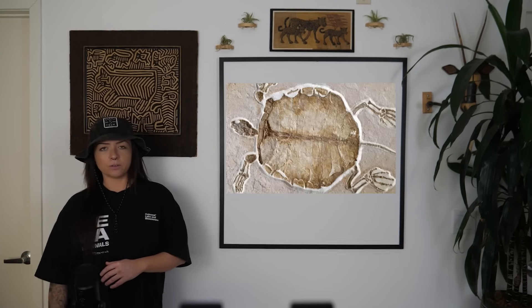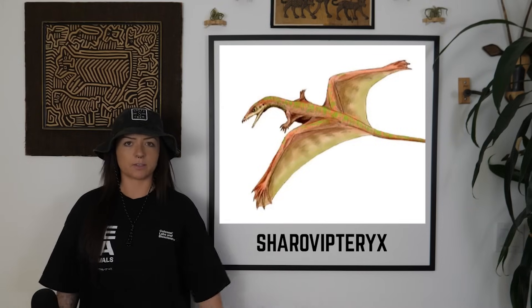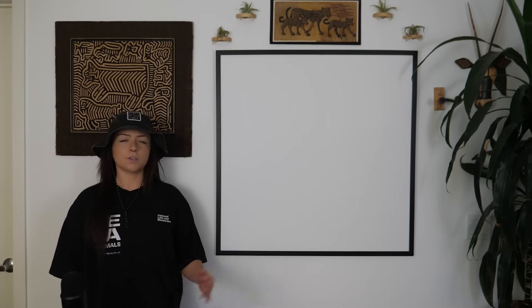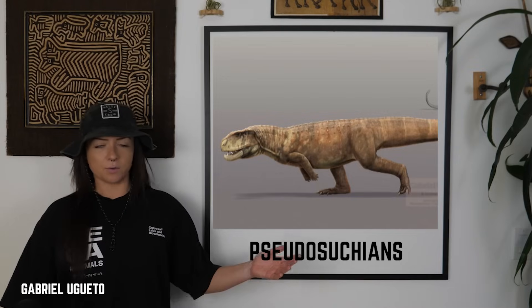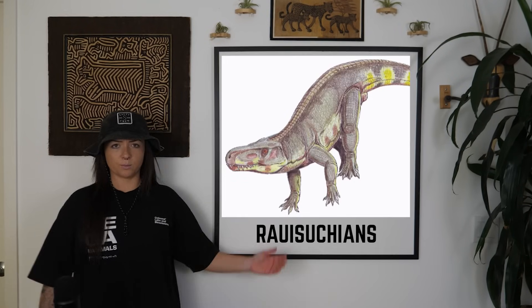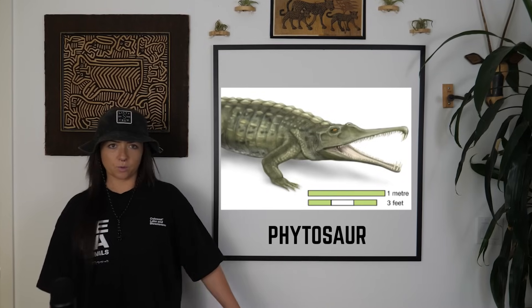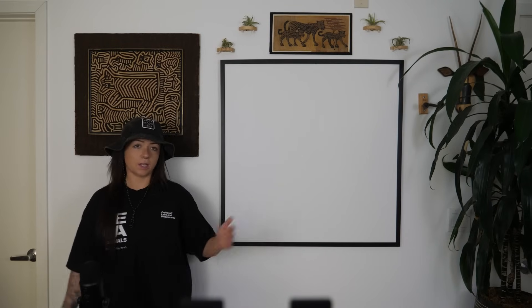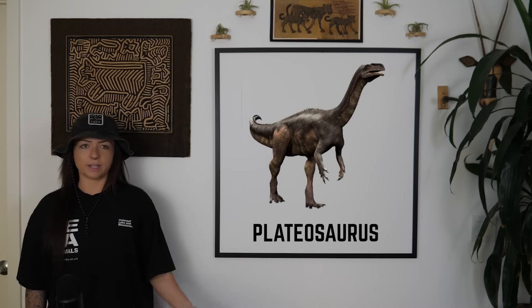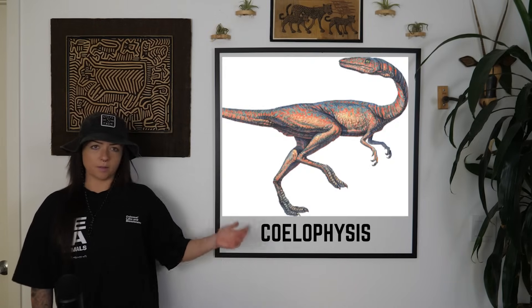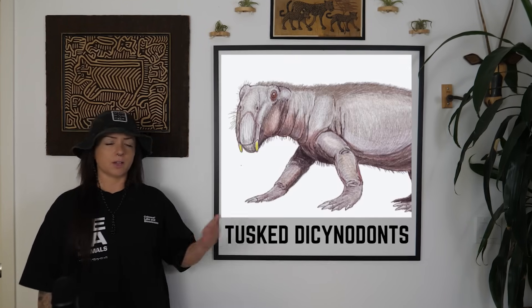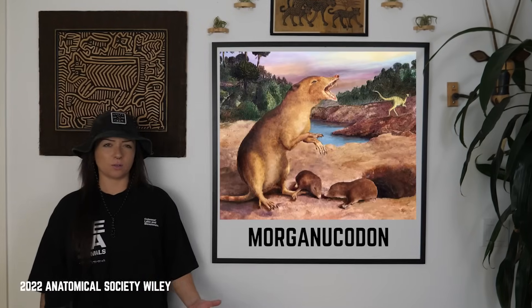Fossils from this time include the earliest known turtles and ancient relatives of lizards, plus reptilian oddballs like the gliding Chorovipteryx and the long-necked Tanistrophius. There's also a wide variety of crocodilian cousins called Pseudosuchians, including armored Edosaurs, predatory Rawisuchians, and the very crocodile-shaped Phytosaurs. The Triassic also features the first flying reptiles, with early pterosaurs like Unamorphodon, and the first dinosaurs — including big herbivores like Pladeosaurus and early predators like Coelophysus. A group called Therapsides included tusk-bearing Dicynodonts, Lystrosaurus, and little mousy creatures like Morganucodon — this group gave rise to the first mammals, our tiny fuzzy ancestors.